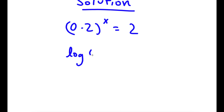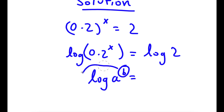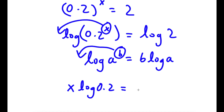So I have log 0.2 to the power of x is equal to log 2. If I have something in the form log a to the power of b, I can move b to the front, so this equals b times log a. In this case I have log 0.2 to the power of x, and I can move x to the front. So now I have x times log 0.2 is equal to log 2.